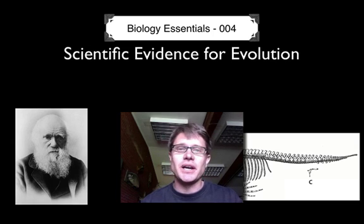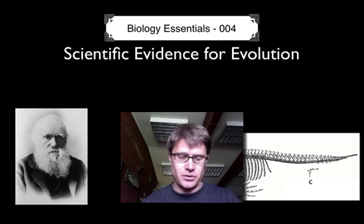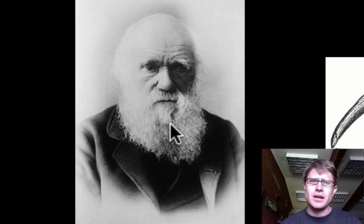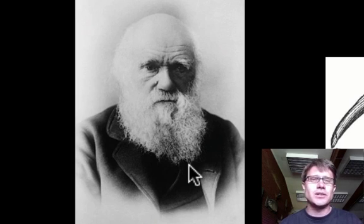Hi, it's Mr. Andersen and welcome to Biology Essentials video number 4. This is on scientific evidence for evolution. Here's a picture of Charles Darwin much later in life. Charles Darwin was a very meticulous scientist. He gathered copious amounts of data to show that evolution was true and that his mechanism of natural selection was right. Unfortunately he didn't have a really good understanding of genetics and DNA obviously was not around back then.